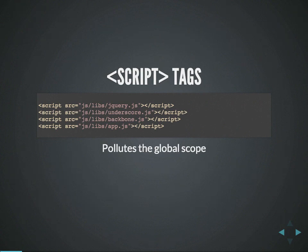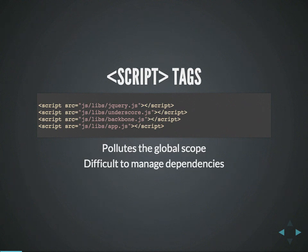Script tags tend to pollute the global scope. As you're working you've got this global soup of variables floating around inside the browser, and as you're dropping script tags on the page, if they are creating more variables and objects they can start to collide. The other reason script tags can be tough is that sometimes they have a dependency order that needs to be respected.